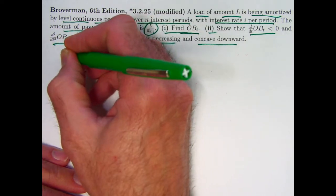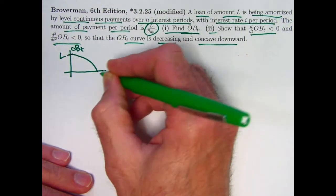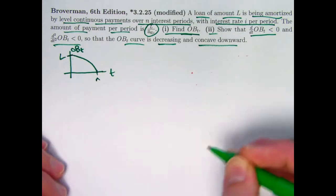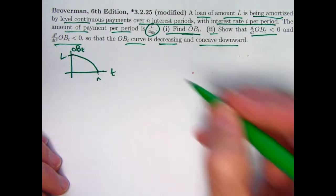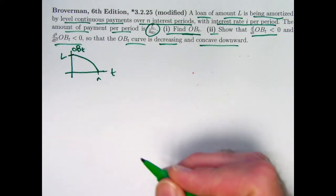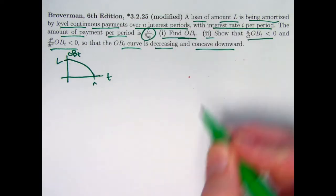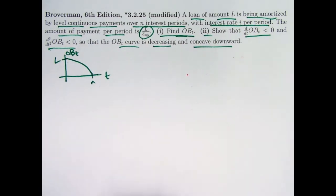It also turns out that the intercepts are L and N — in other words, the initial balance is the loan amount L, and the balance does get paid off by time N, if this is the amount of your payment per period.